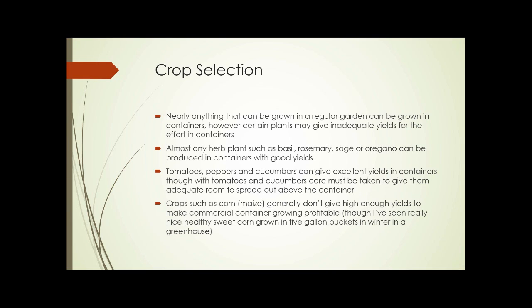Crop selection. Almost anything that you can grow in a regular garden can be grown in a container, but certain plants may give inadequate yields for the effort required. Almost any herb — basil, rosemary, sage, oregano — can be produced in containers with really good yields. Tomatoes, peppers, and cucumbers can give excellent yields in containers, though with tomatoes and cucumbers you have to give them adequate room to spread out above the container, just like in a garden. Crops such as corn generally don't give high enough yields to make commercial container growing profitable, though healthy sweet corn grown in five-gallon buckets in a greenhouse is possible. It really depends on the effort you're willing to put in for the yield you expect to get.